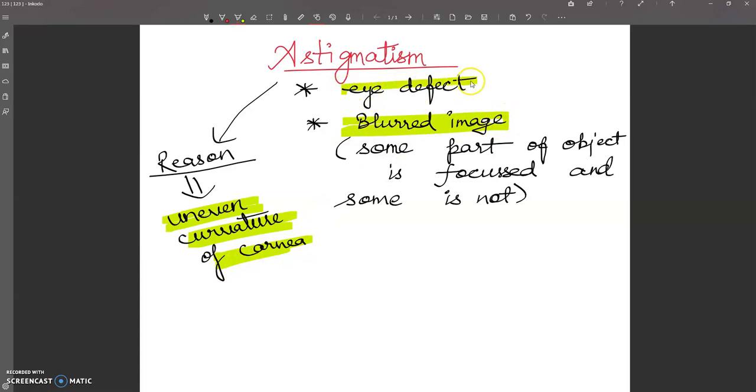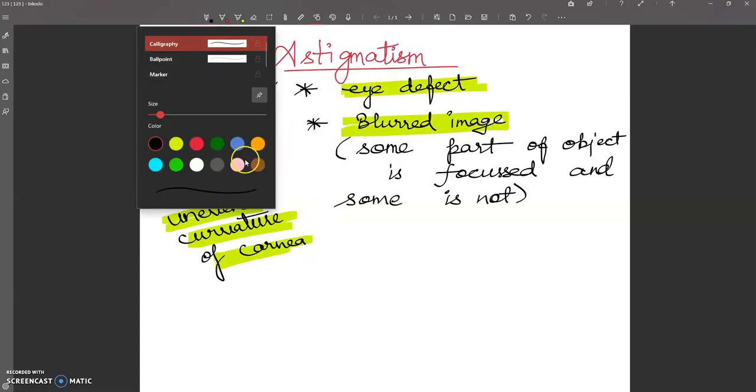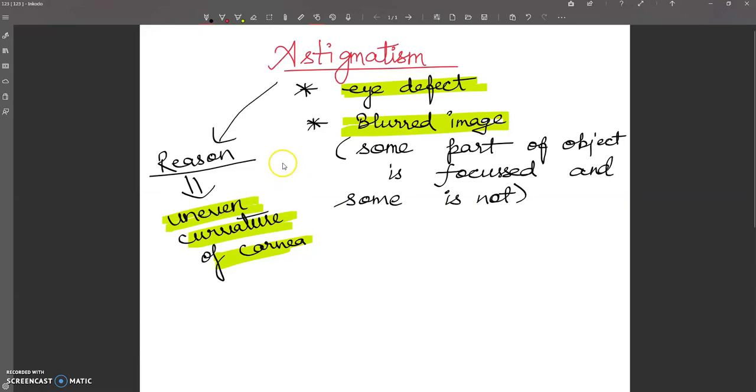There will be a blurred image, and this is an eye defect. In the next point, we will talk about how the correction is going to be done.